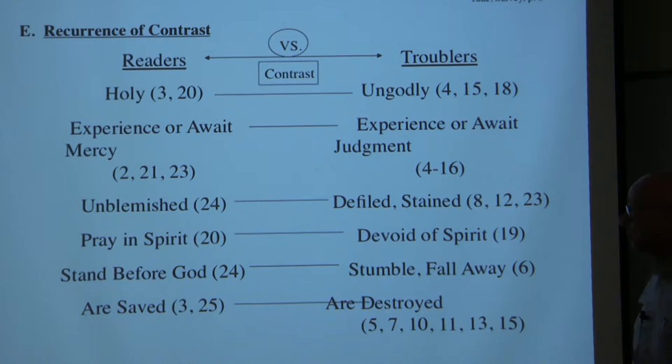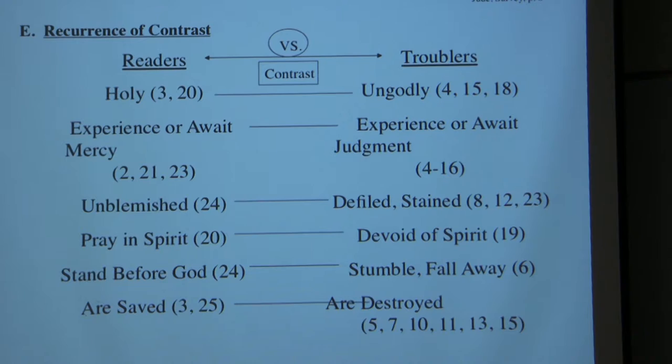The readers experience or await mercy in verses 2, 21, and 23, whereas the troublers experience or await judgment in verses 4 through 16. The readers are described as unblemished in verse 24, whereas the troublers are described as defiled and stained in verses 8, 12, and 23.